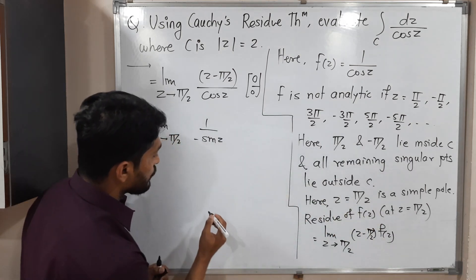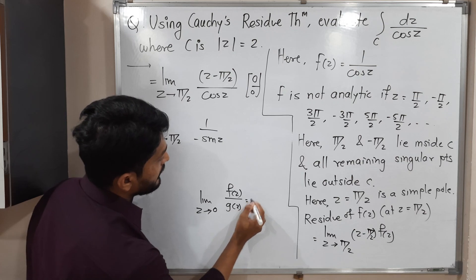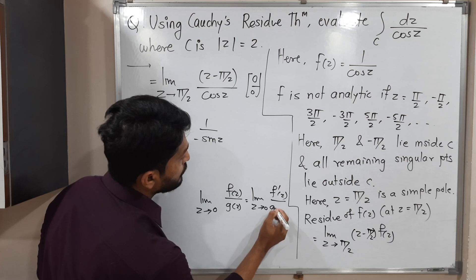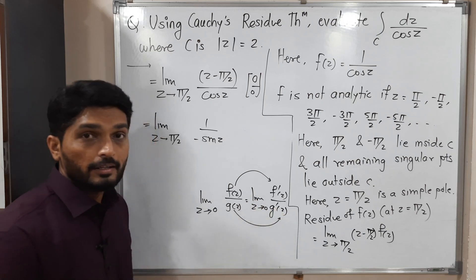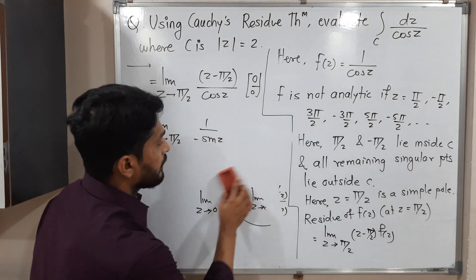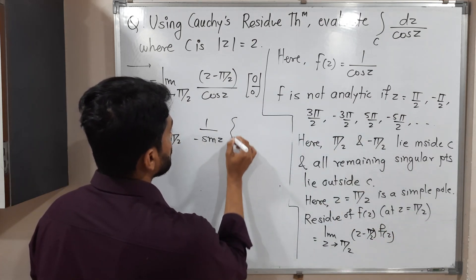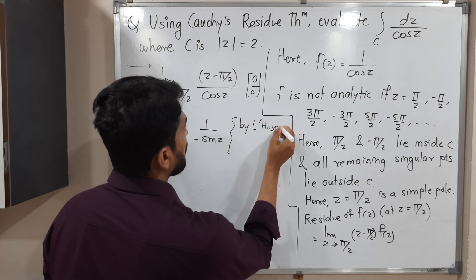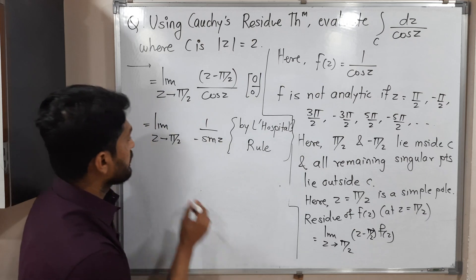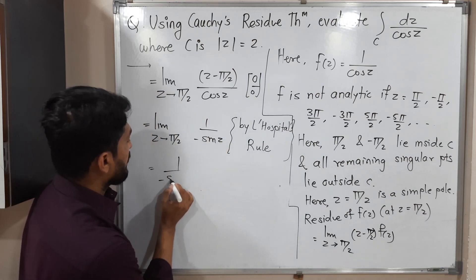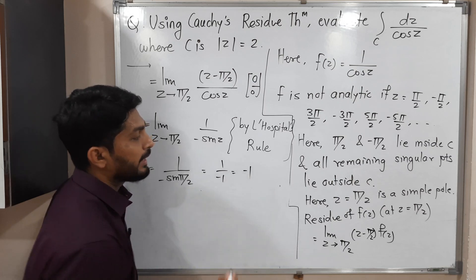By L'Hôpital's rule, we get limit z tends to π/2 of 1 upon (−sin z). Now applying the limit, we get 1 upon (−sin(π/2)). Since sin(π/2) = 1, this gives 1 upon −1 = −1. So the residue at z = π/2 is −1.